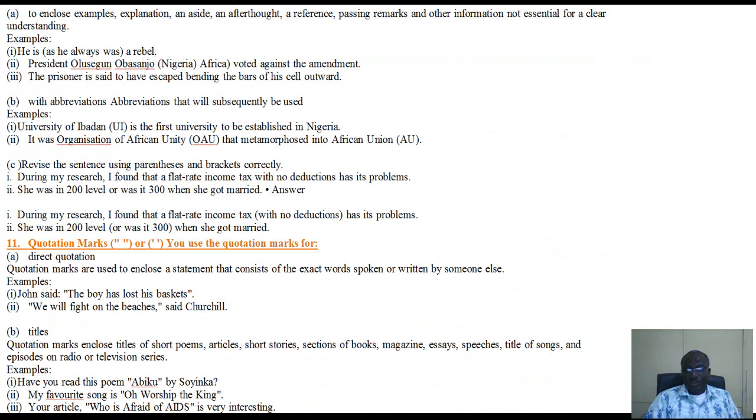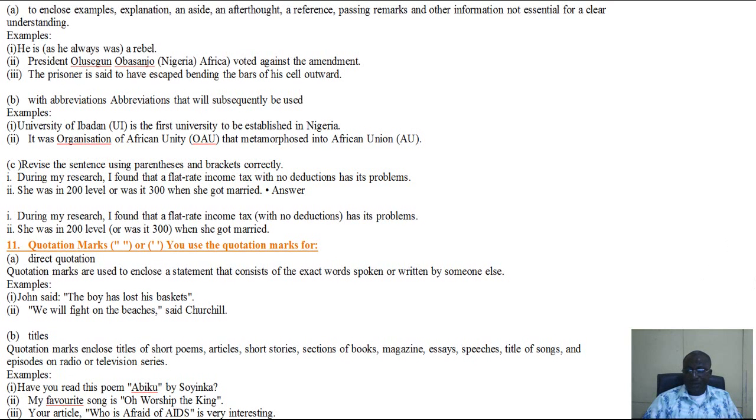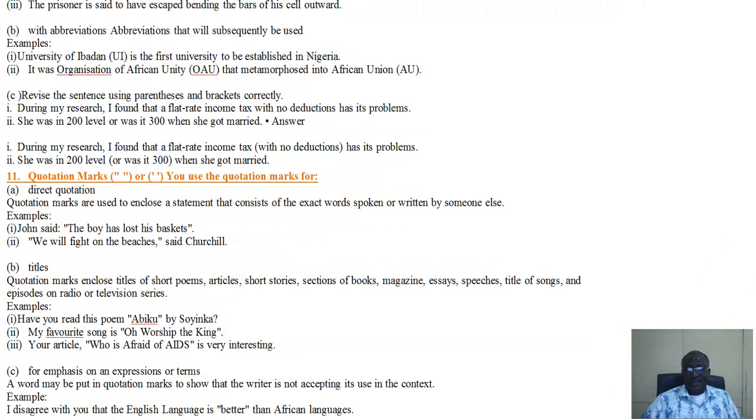We also have the quotation mark, whether single quotes or double quotation marks. What are the quotation marks used for? The first is that quotation marks are used to enclose a statement that consists of the exact words spoken or written by someone else. In other words, to be able to say these are not my words, these are the words of the person I am alluding or referring to. John said, and there you have the open quotation mark: The boy has lost his baskets, and then you close the quotation mark. So what are you saying? That these are the exact words of John.